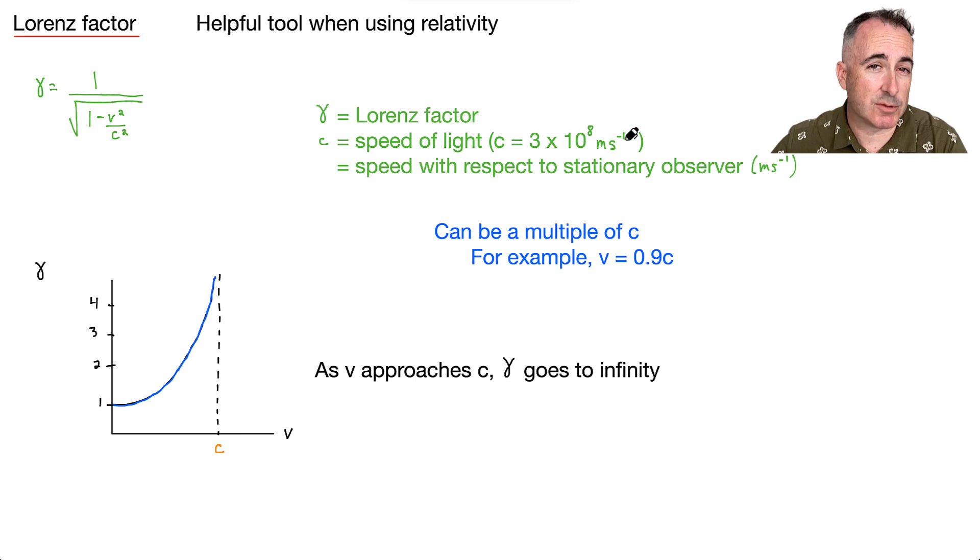So it's three times 10 to the eight meters per second, because if it wasn't in a vacuum, if it's like in glass, then it's different. But we'll assume everything's going through space. And v is just your speed with respect to the stationary observer. And we often have the speed as a multiple of c. So for example, we might say, hey, you're going 0.9c. That's a common thing to say. So that means you're going 90% the speed of light and so on.